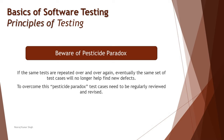Stepping into the next one: principle number five is called 'beware of pesticide paradox.' Pesticide paradox seems like a very unusual term. Pesticide comes from the idea of killing a pest, and paradox refers to a belief system that makes you believe you are right. This concept was actually borrowed from the agriculture domain.